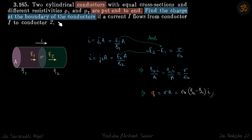So we need to find the charge at the boundary of the conductors. What is the charge developed at the boundary if the current I flows through it?